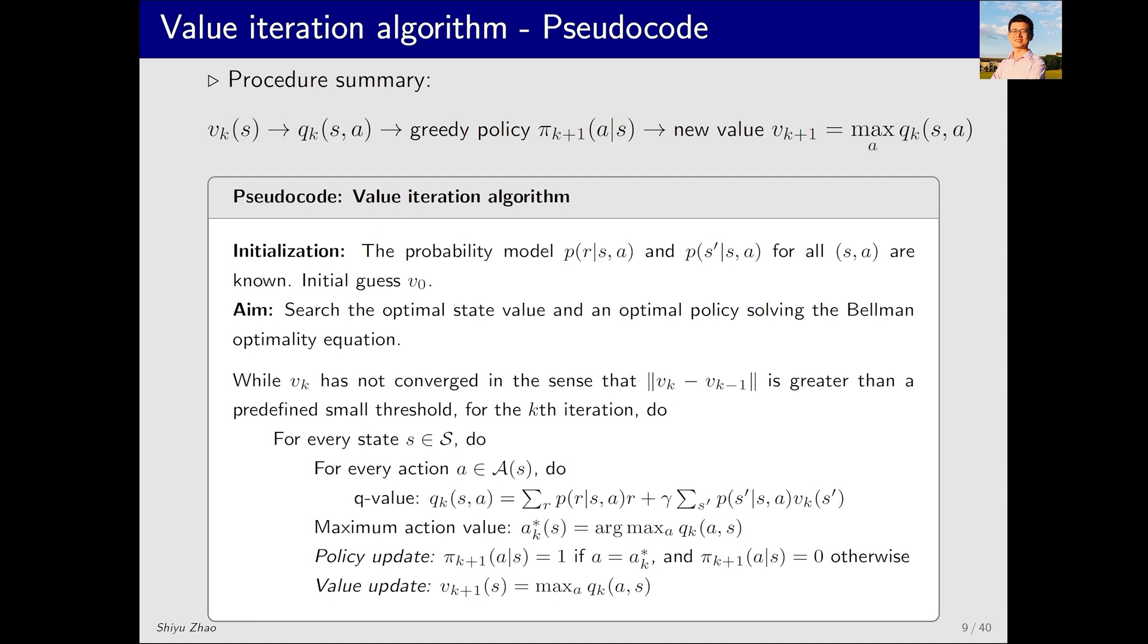Now, we summarize the entire process. Let's look at this process. I start with v_k. Initially, v_k can be v_0 or v_1. From v_k, I can calculate q_k. Once I obtain q_k, I immediately know the greatest q_k and its corresponding action. Then, I can obtain the greedy policy π_k+1. And, I can also obtain this v_k+1, which corresponds to the greatest q_k.